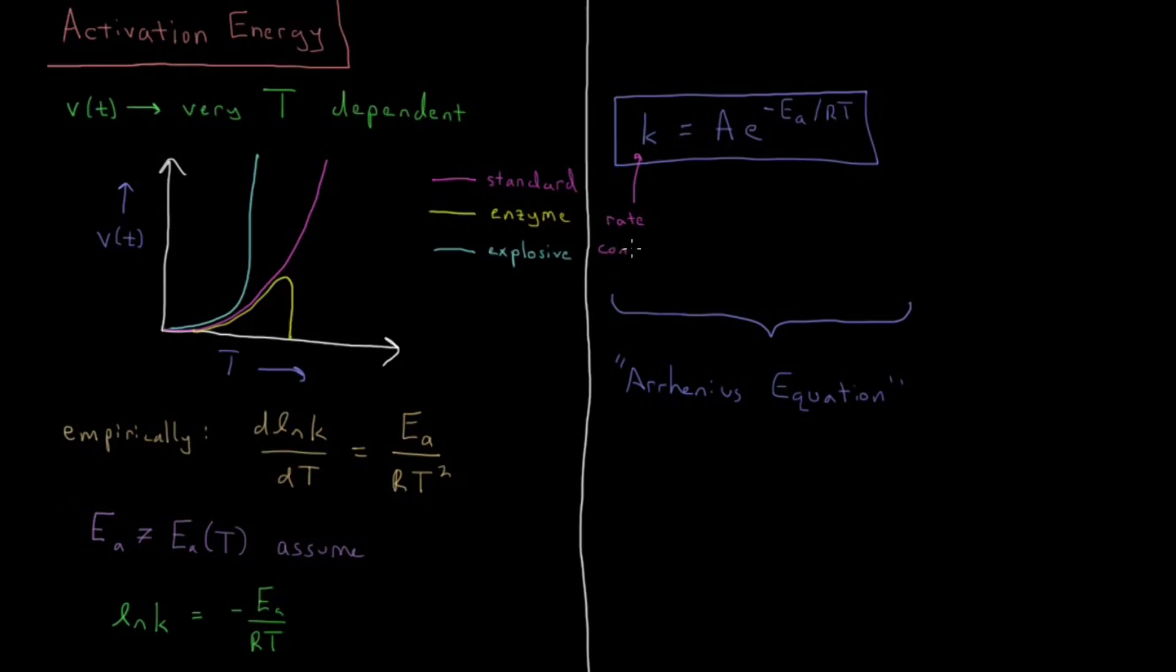So, marking some terms here, we have the rate constant, which as we said, has some temperature dependence through the Arrhenius equation. We have this value called the pre-exponential factor. Sometimes it's called the Arrhenius factor, but usually it's just called the pre-exponential factor. Then we have our temperature, gas constant, and the last quantity of interest here is this EA, which is called the activation energy.